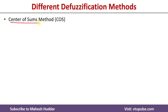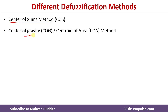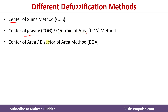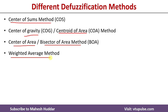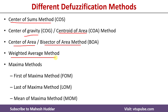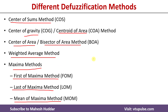Those are: center of sum method, center of gravity or centroid of area method, center of area or bisector of area method, weighted average method, and maxima methods. In the maxima methods, we have first of maxima method, last of maxima method, and mean of maxima method. So these methods we will discuss one by one.